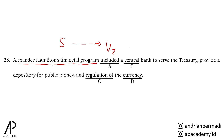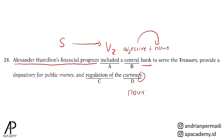Pilihan B, central. Central adalah adjective. Dalam aturan word order, apabila dalam suatu phrase terdapat adjective, maka hal yang muncul setelah adjective haruslah noun. Bank adalah noun. Oleh karena itu, central masih tepat karena central sebagai adjective menjelaskan bank yang merupakan noun. Kita lihat pilihan D, currency. Akhiran Y dalam beberapa kata menunjukkan bahwa kata tersebut adalah noun. The currency muncul setelah preposition of, dan salah satu pola yang muncul setelah preposition adalah adanya noun. Oleh karena itu, the currency masih benar.